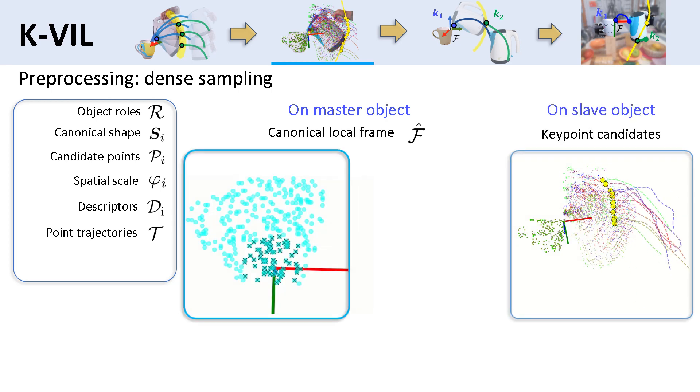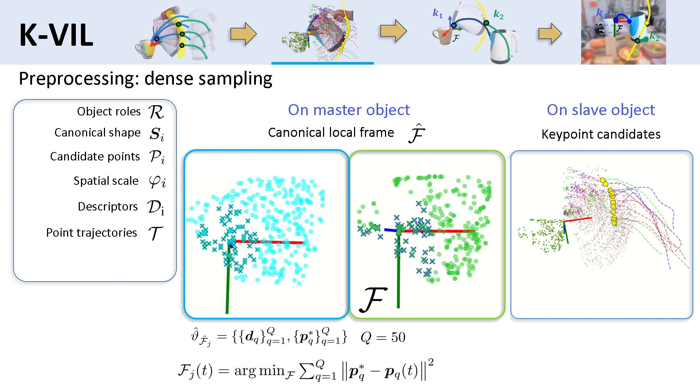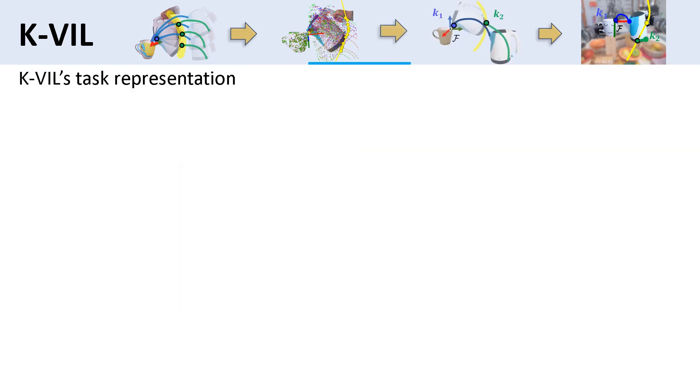To do so, we first define the canonical local frame on the canonical shape, which takes the candidate points on the teacup as the origin and 50 neighboring points as references to determine its orientation. Their descriptors allow us to identify them in another image frame. To find the local frame, we minimize the overall square distance of the observed candidate points to their references.